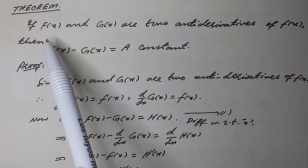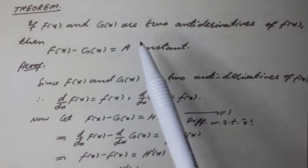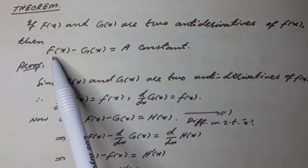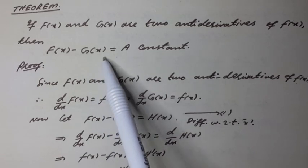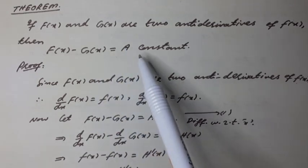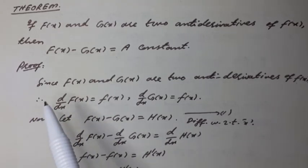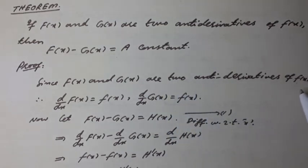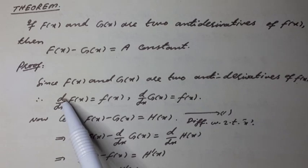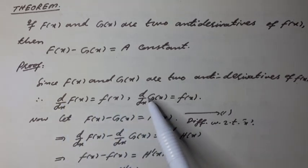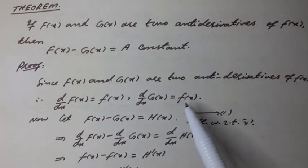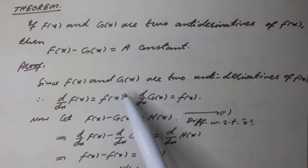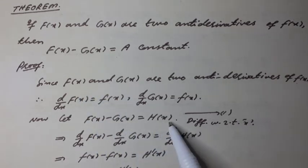Theorem: If F(x) and G(x) are two antiderivatives of a function f(x), then F(x) minus G(x) is equal to a constant. Proof: Since F(x) and G(x) are two antiderivatives of f(x), therefore dF/dx = f(x) and dG/dx = f(x). Let F(x) minus G(x) equal to H(x) — Equation 1.